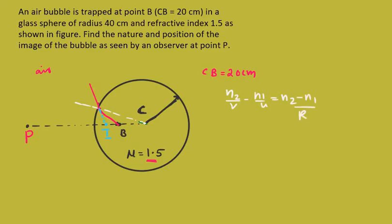N2, the second medium, is air medium, so we can substitute N2 as 1. V we need to find out. N1 is 1.5. For U, you will be measuring from this point. Let us mark this point as O, the surface.